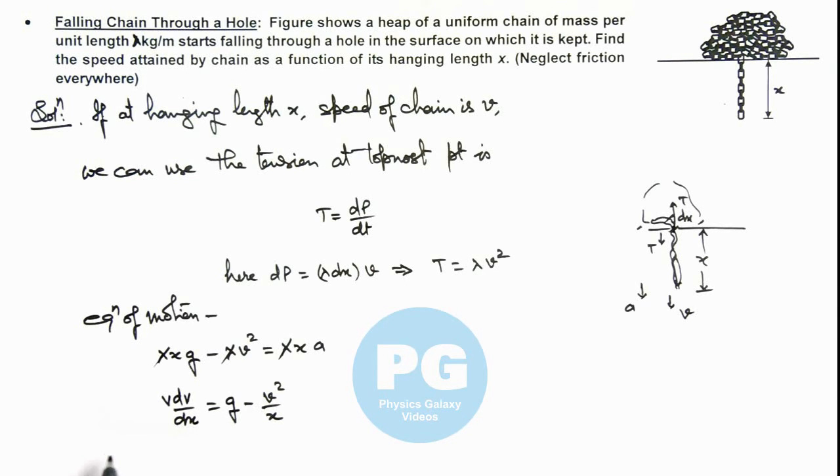We can substitute t equals v squared. This implies dt equals 2v dv. On substituting...